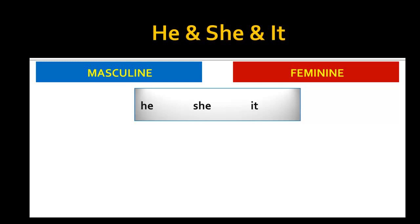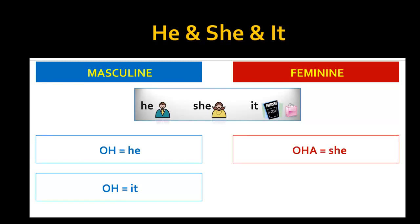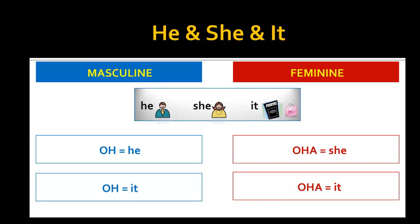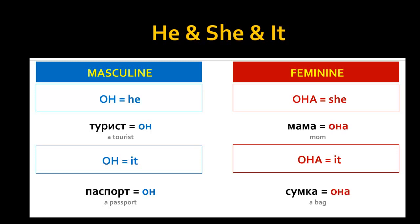In English you can use the pronoun He to refer to any male person and She to refer to any female person, and It to refer to any inanimate object or thing. However, the Russian equivalents of He and She can refer both to animate and inanimate objects. For example, Он can mean He or It. What is important is the grammatical gender of the word. In Russian, both ТУРИСТ and ПАСПОРТ can be referred to as Он because both words are masculine, and the words МАМА and СУМКА can be referred to as ОНА because both words are feminine.